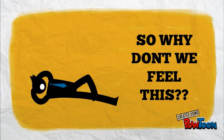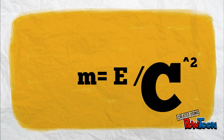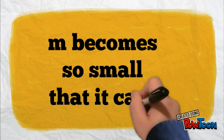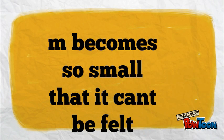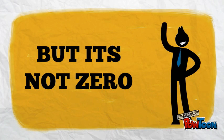So if that's true, why we don't feel this mass? Probably because in m equals E over c squared, the C is so large, it's the speed of light, that M becomes so small that it can't be felt. But remember, it's not zero.